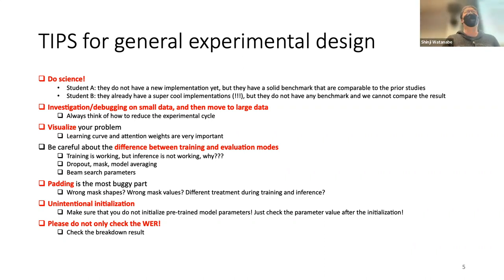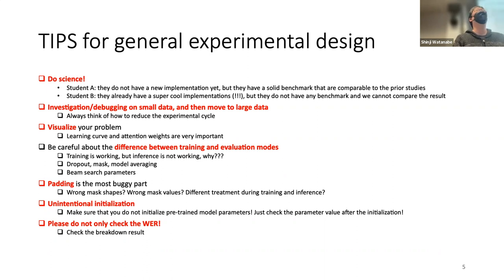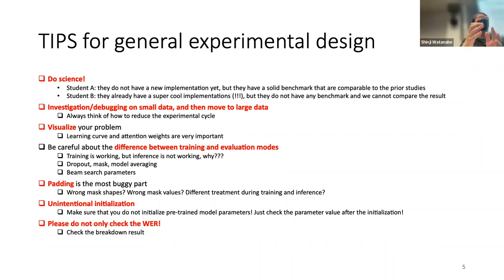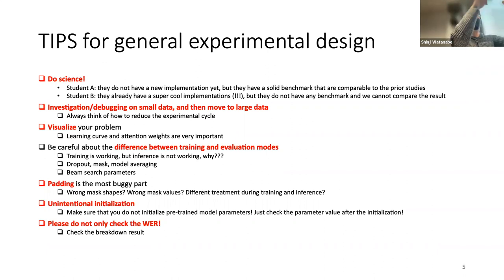This is the classical approach. For example, the ESPnet recipe tutorial uses AN4, and we can finish training with Google Colab in 20 minutes. This is a good example for testing your implementation — later scale up to other problems. If you find issues, go back and debug on small data. The key is to make the experimental cycle shorter so you can run more trials.